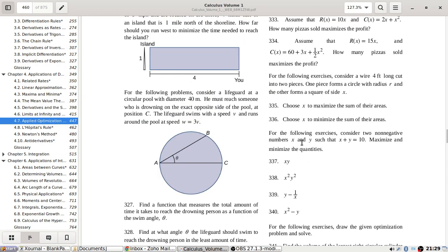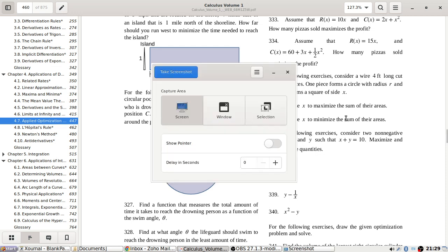Let's see what's next. For the following exercise, consider a wire four foot long cut into two pieces. One piece forms a circle with radius r and the other piece forms a square of side x.